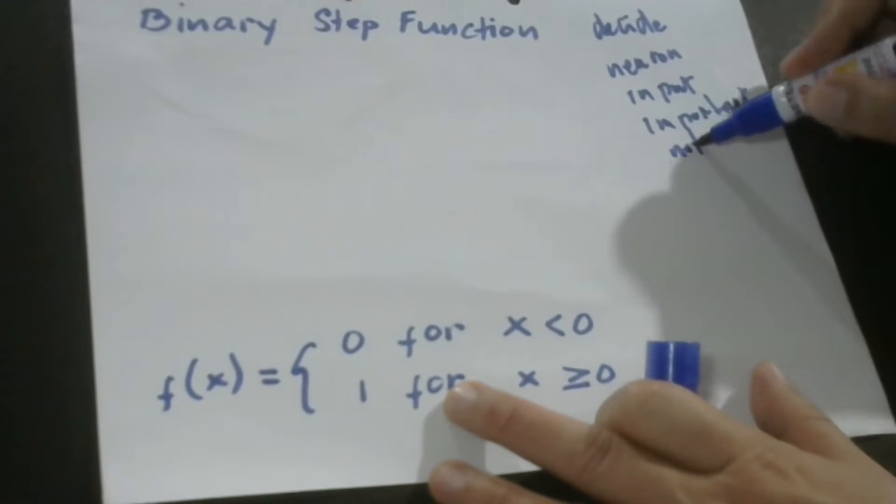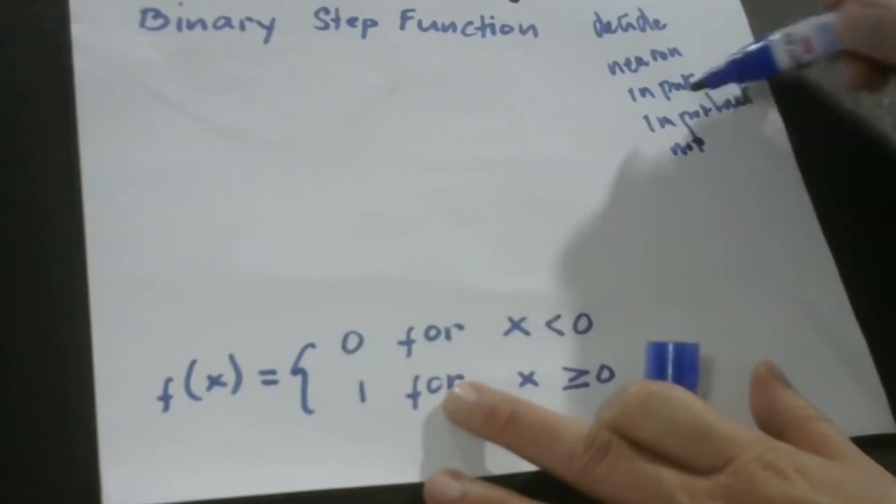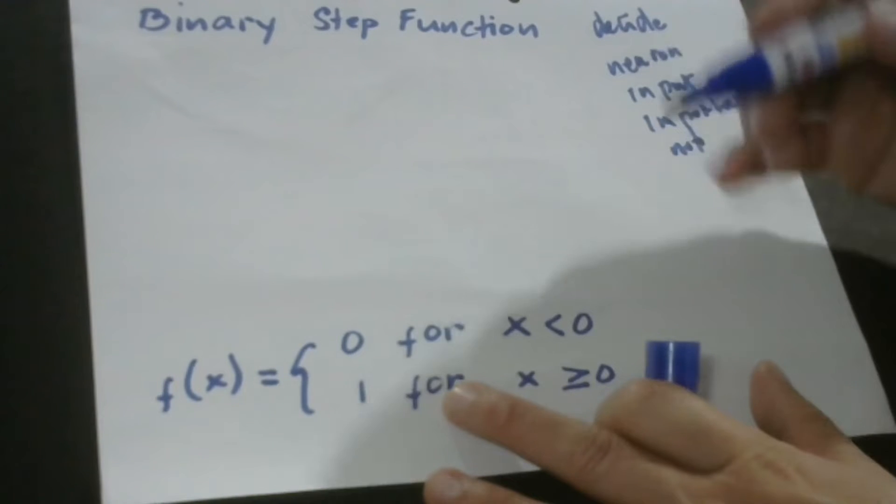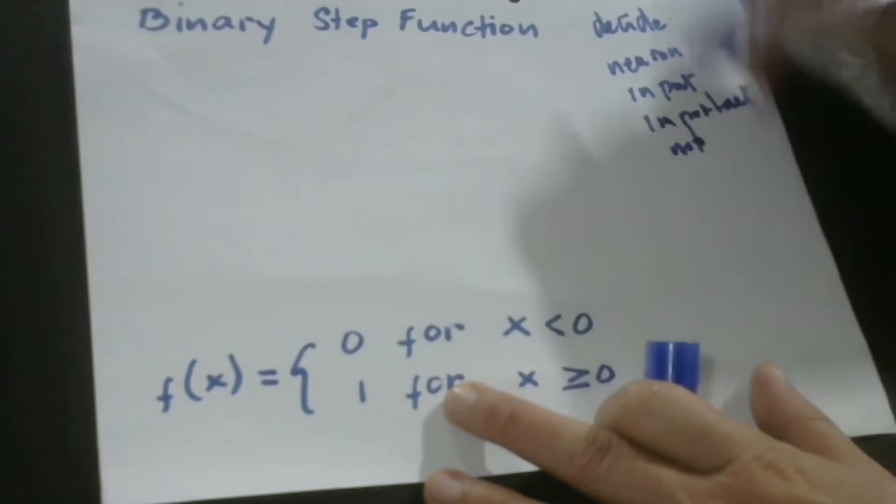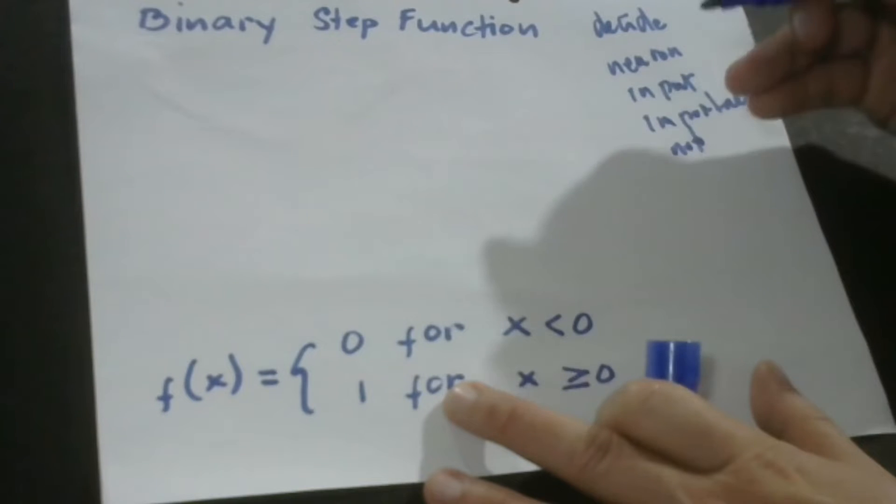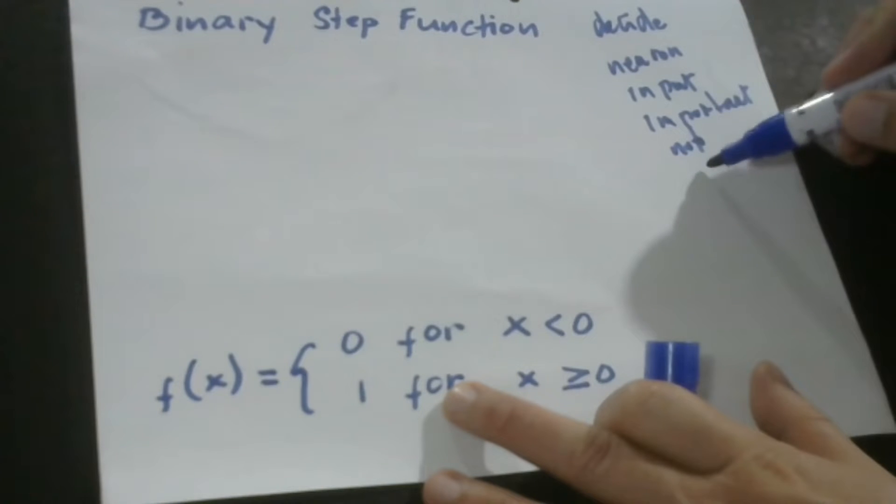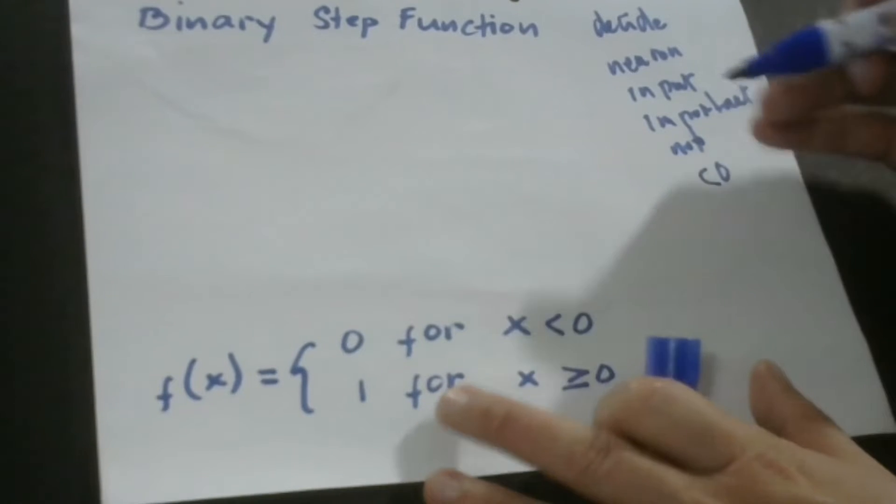When that particular input is important, then it will be activated and move on to the next layer. If it is not important, so it's zero for example, or less than zero, then it will not be activated, or in other words, it will be deactivated.